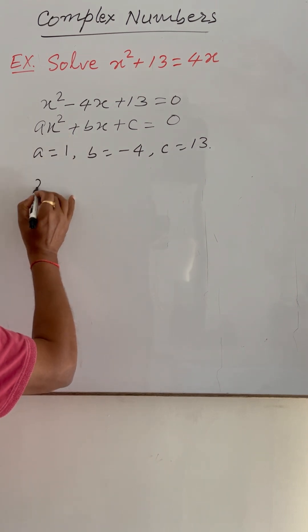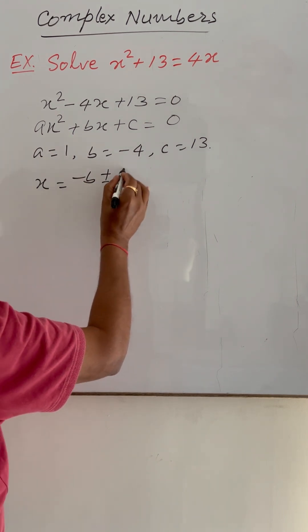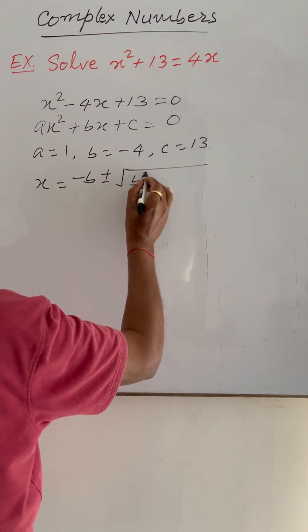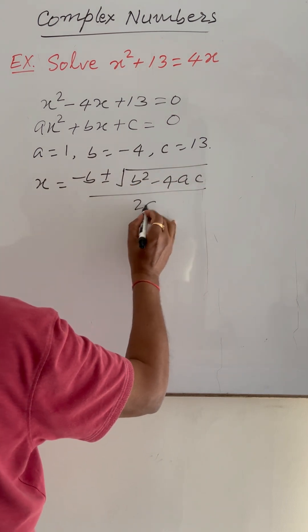So we can get the solution by using this formula. x is minus b plus minus root over b squared minus 4ac upon 2a.